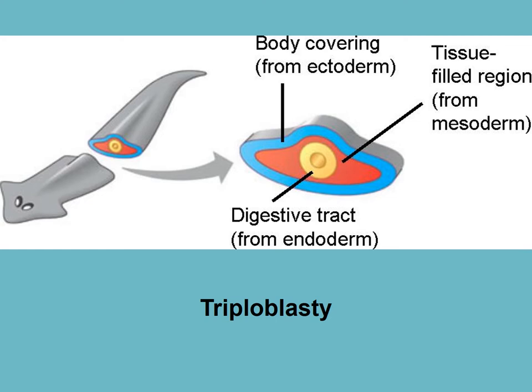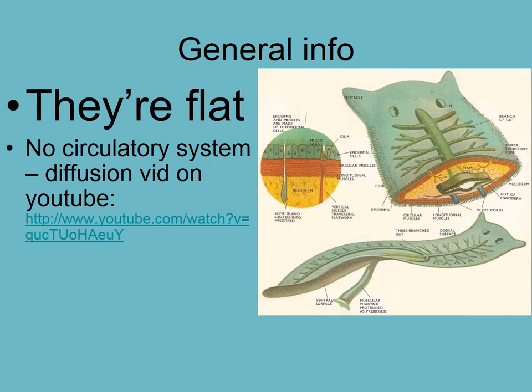Moving up the evolutionary ladder of complexity from Porifera to Cnidaria, which were diploblastic — they had two tissue layers. Porifera had no tissue, if you remember. And now we have triploblasty: three layers. We start with the endoderm, which lines the gut cavity, and the ecto- or epiderm, lining the outside. There's tissue on the inside, which allows the evolution of things like organs.